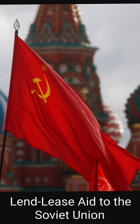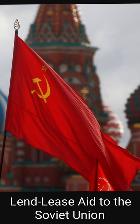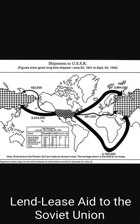These included some 400,000 jeeps and trucks, 12,000 armored vehicles of which 7,000 were tanks — more specifically 1,386 M3 Lee tanks and 4,102 M4 Sherman tanks were sent. Additionally, they received 11,400 aircraft, of which 4,719 were Bell P-39 Airacobras, as well as 1.75 million tons of food, primarily salt, grain, and other foodstuffs.